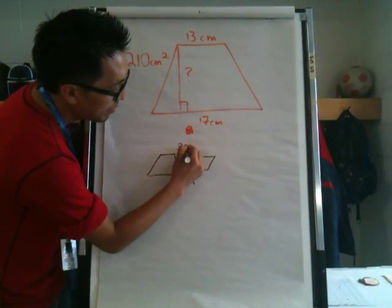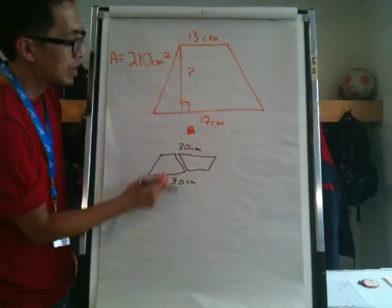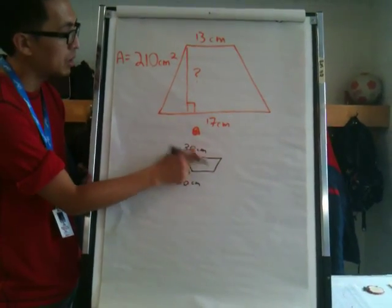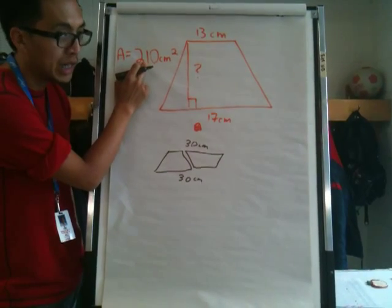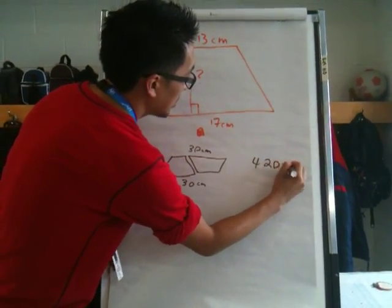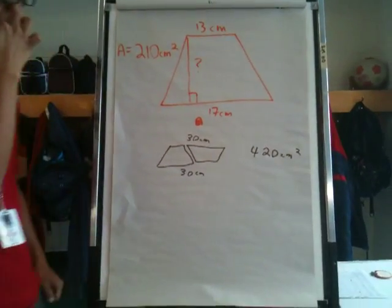The other side is the same. We still don't know the height, but in this situation, we know that because we doubled it, we would have to turn 210 centimeters squared into 420 centimeters squared.